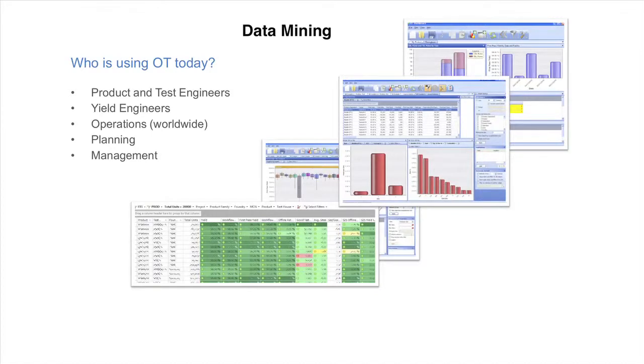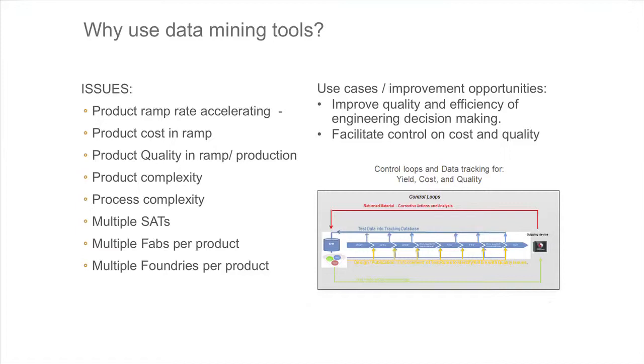Who's using Noti today at Qualcomm? A little bit of everybody. It is a massively deployed tool used by everybody from operations to engineering. The production ramp is accelerated, and the product cost during the ramp is where the biggest savings can be acquired. If you're ramping very fast, every yield point is worth gold. Product quality during the ramp is dangerous — if you have a huge ramp and your product quality is bad, customers will throw you out and won't let you back in. Managing product quality proactively is critical to success.